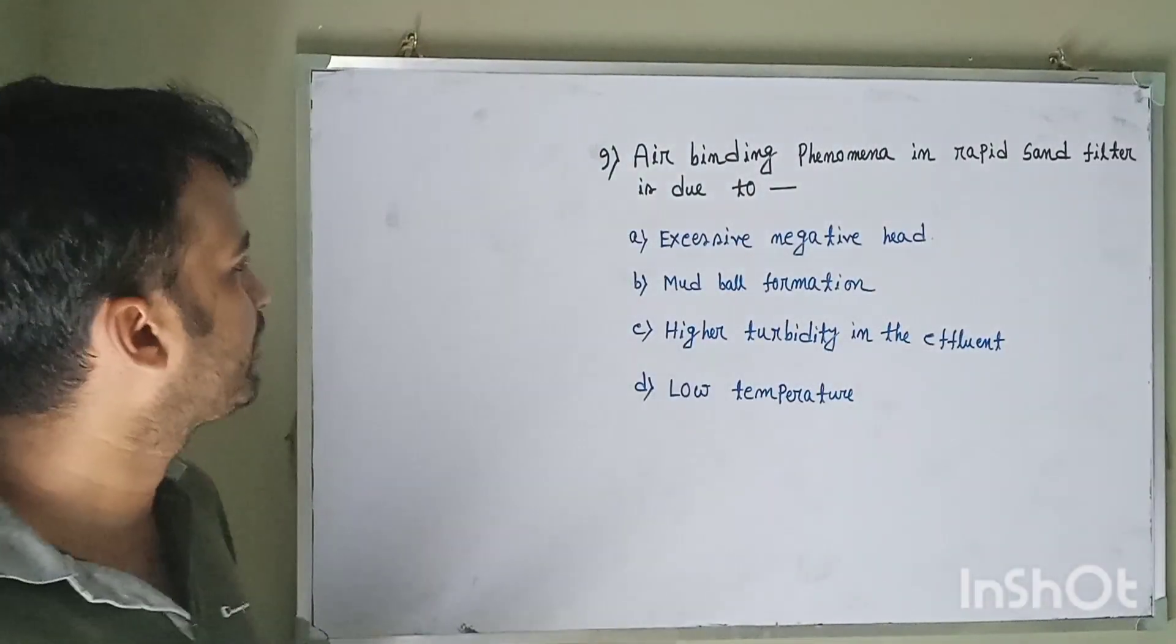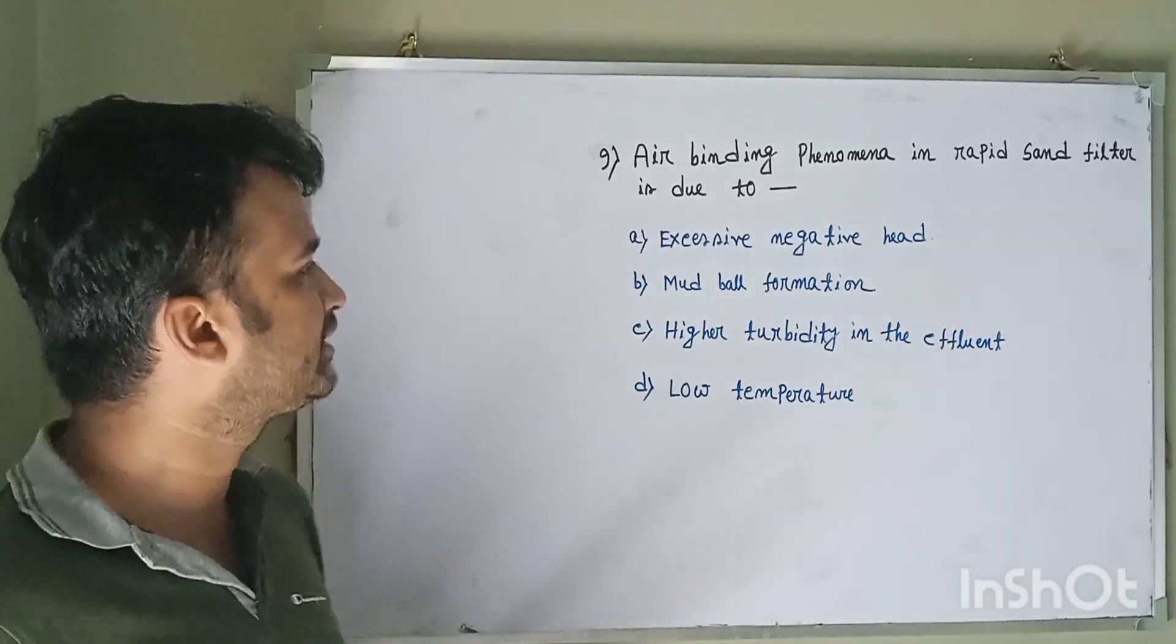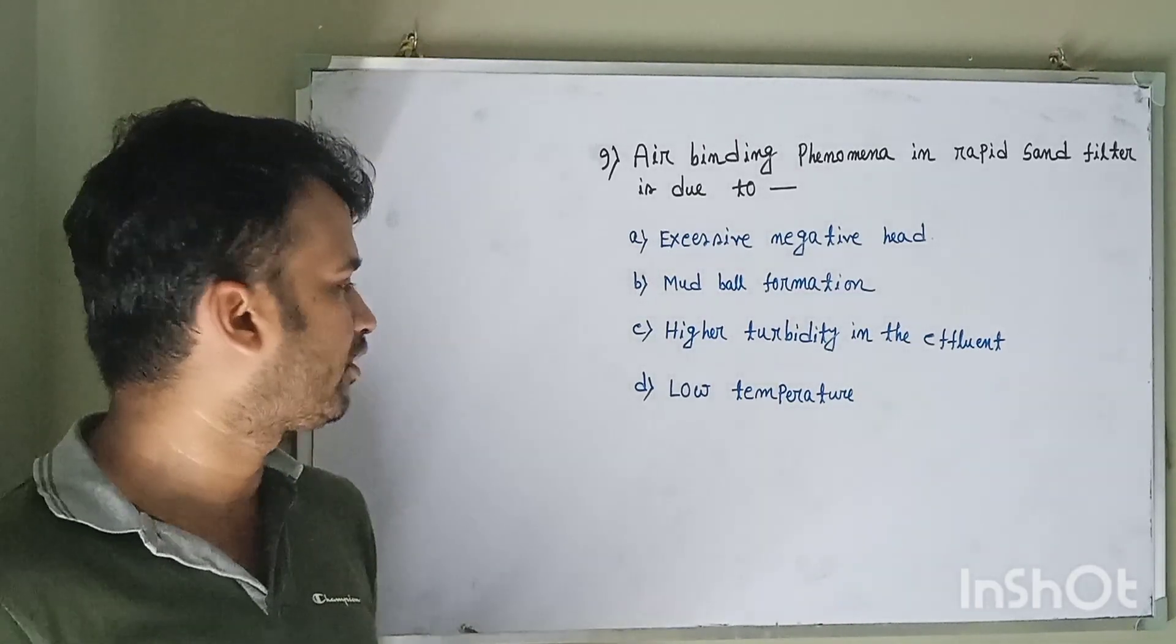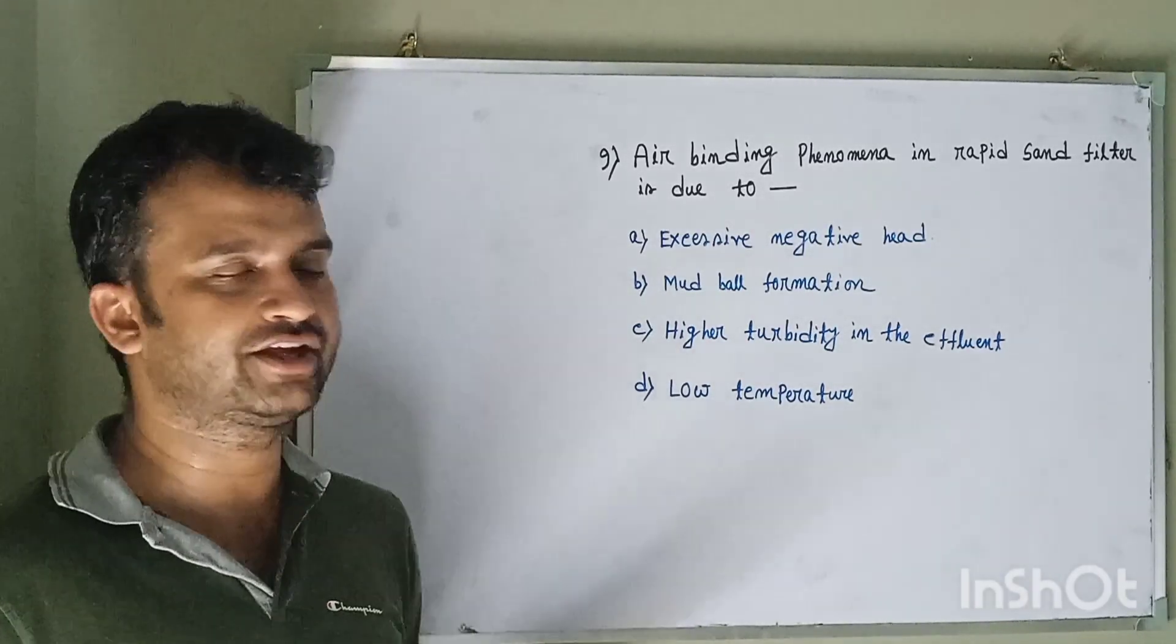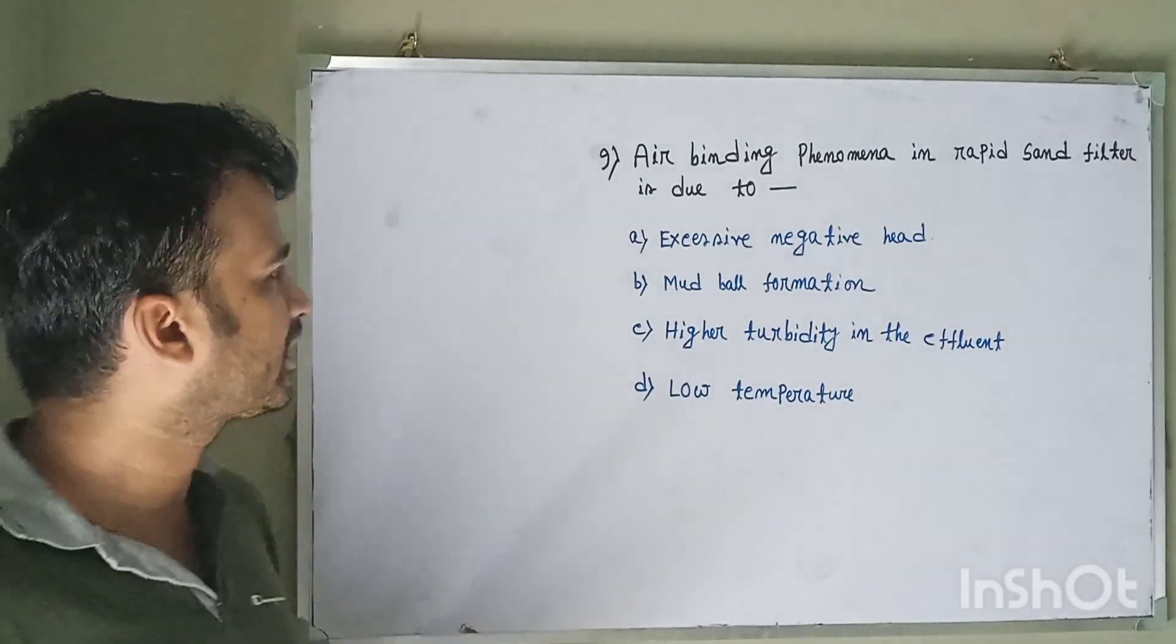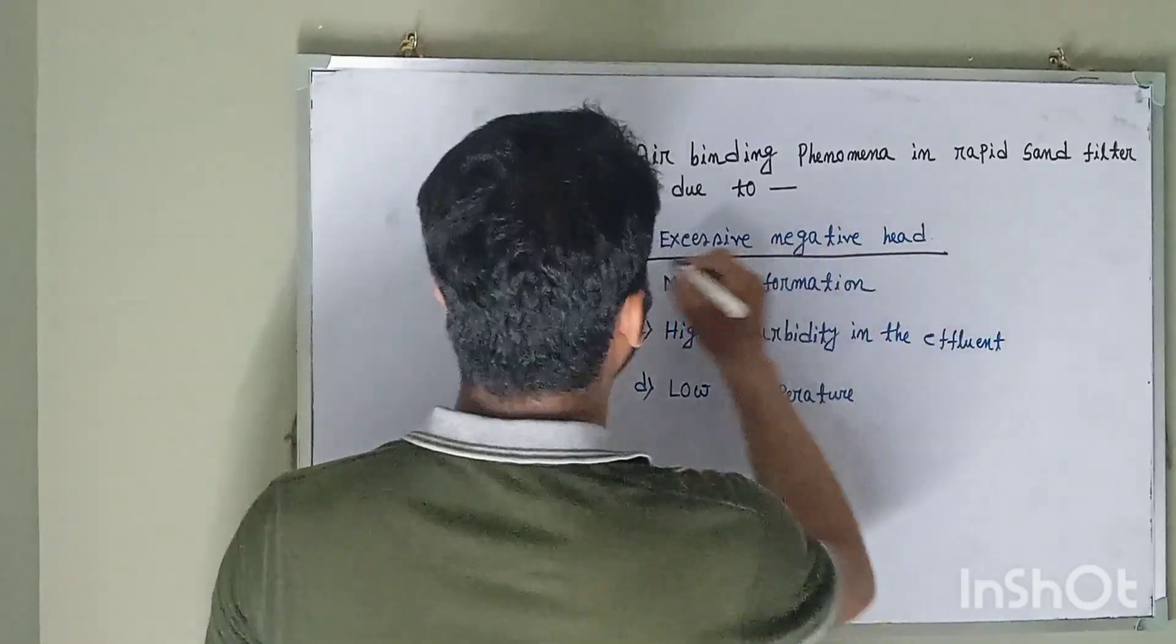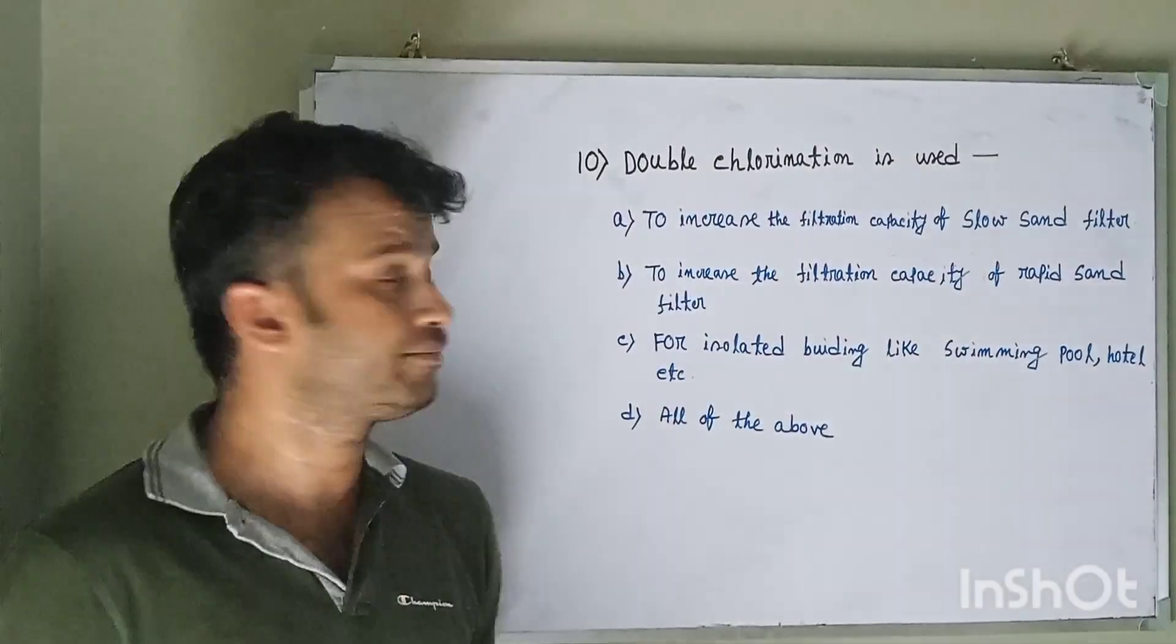Question number nine: Air binding phenomena in rapid sand filter is due to option A excessive negative head, option B mud ball formation, option C higher turbidity in the effluent, option D low temperature. This question is very important and often asked in many competitive examinations. The correct answer is excessive negative head. Whenever there is excessive negative head in the rapid sand filter, the air binding phenomena happen.